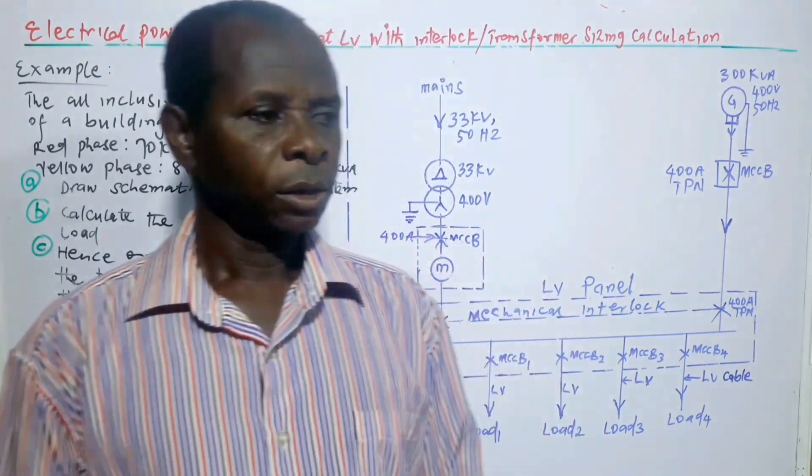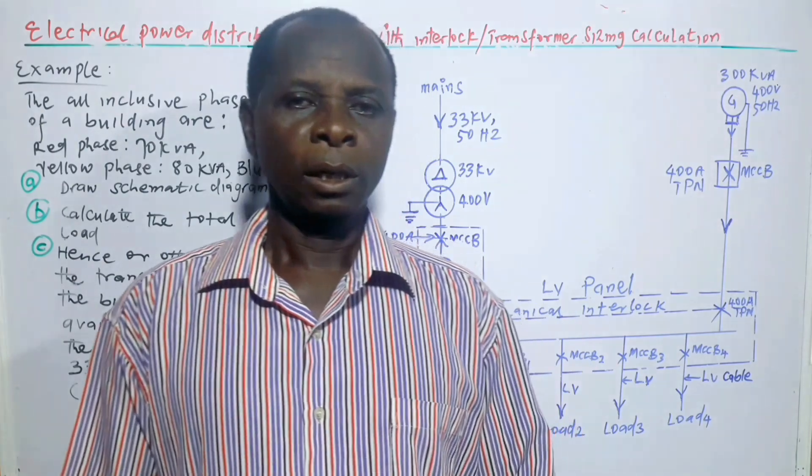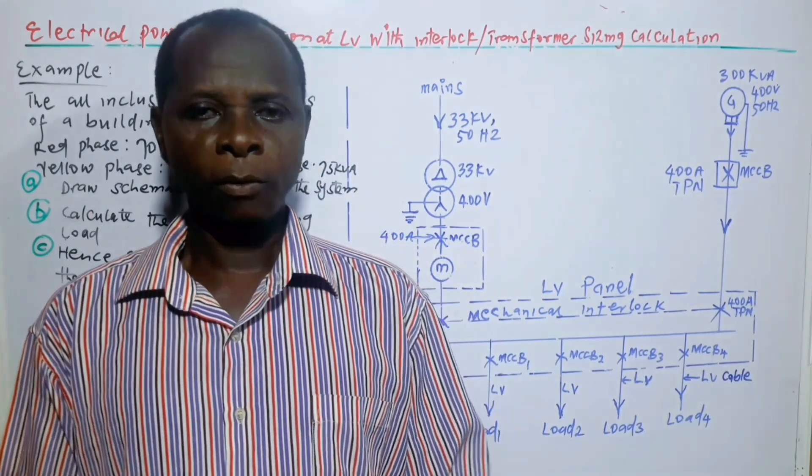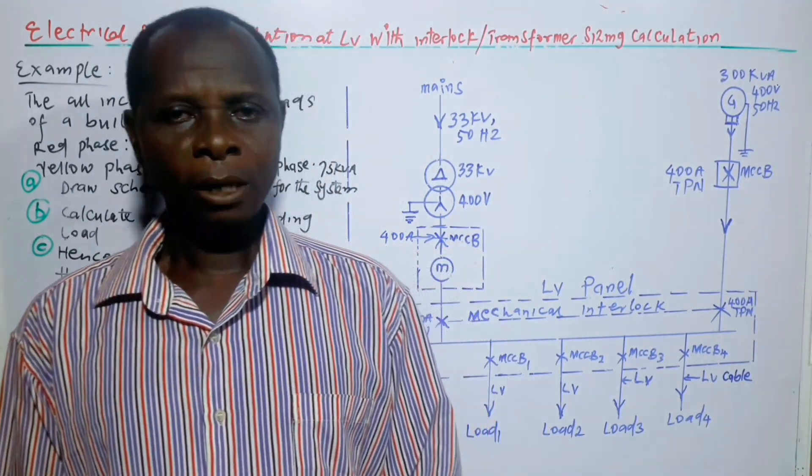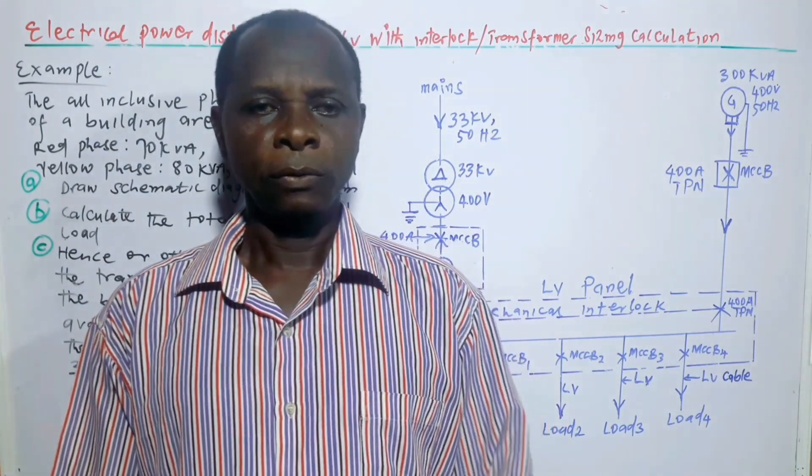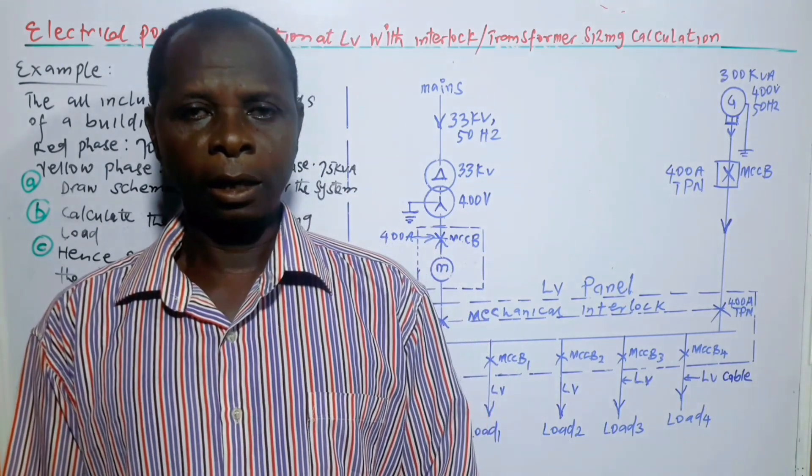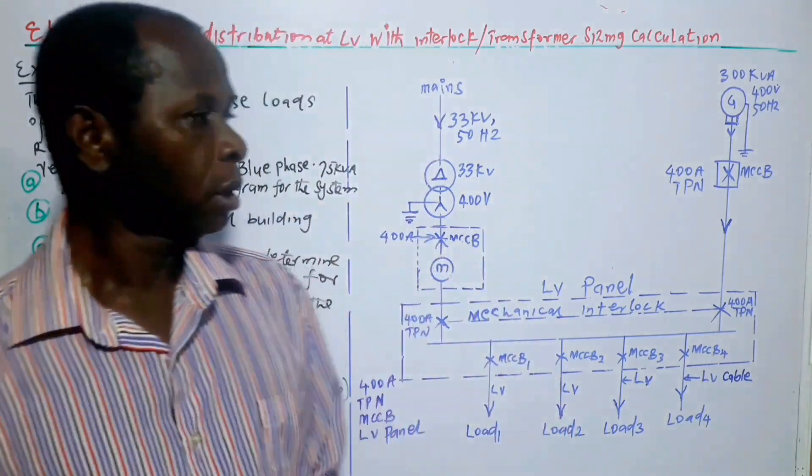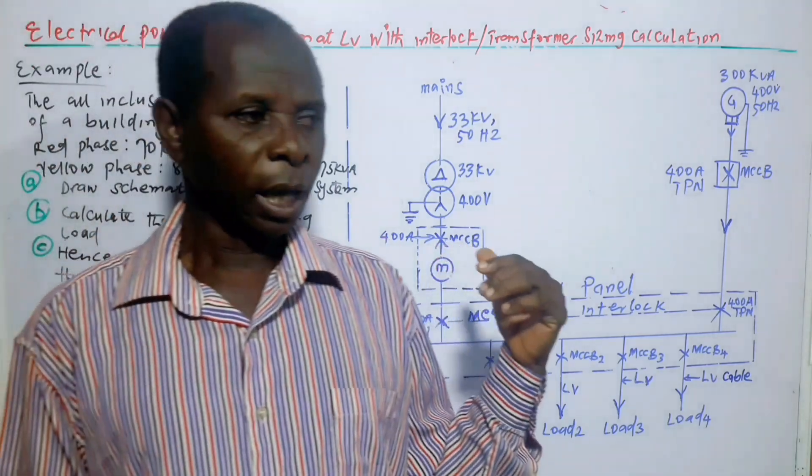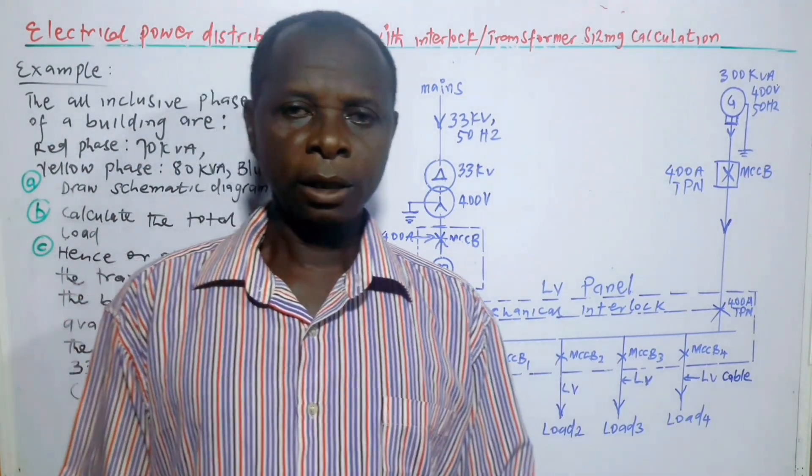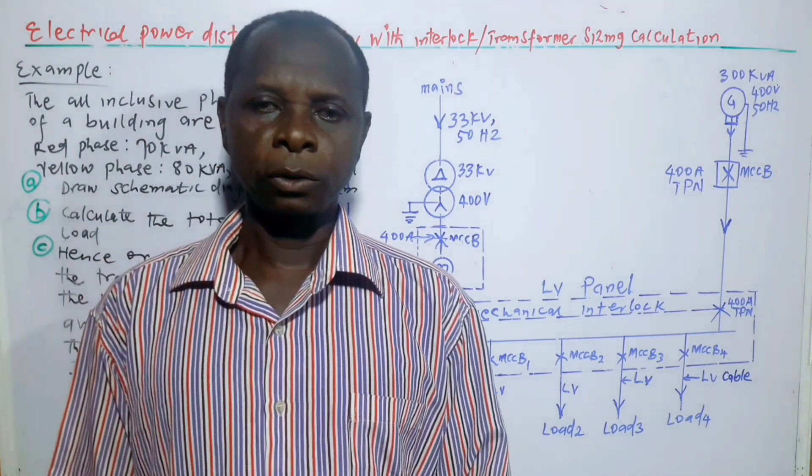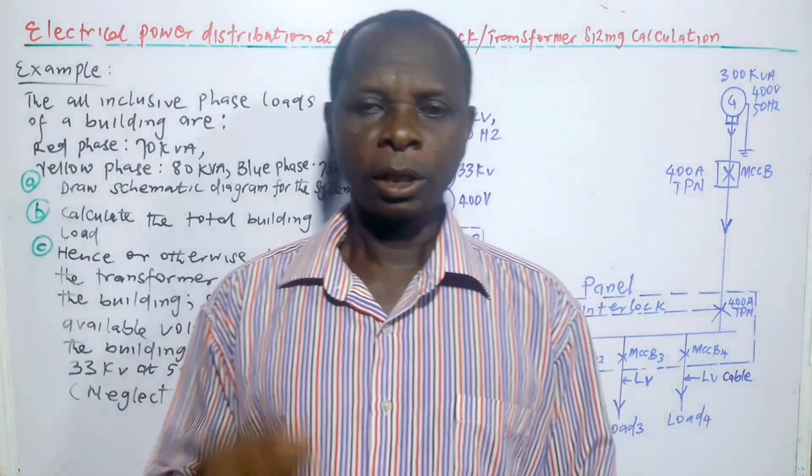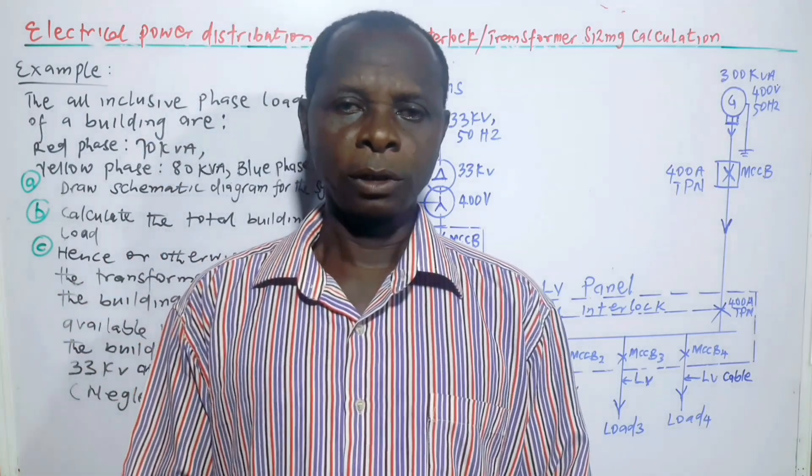Welcome to JK Solutions Channel. This video is all about electrical power distribution system and transformer sizing calculations at low voltage. In some of my previous videos, power distributions were done at medium voltages, mainly 11 kV or 33 kV. But in this situation, the supply transformer steps 33 kV down to 400 volts for the purpose of distribution at low voltage, as indicated by the topic of this video.